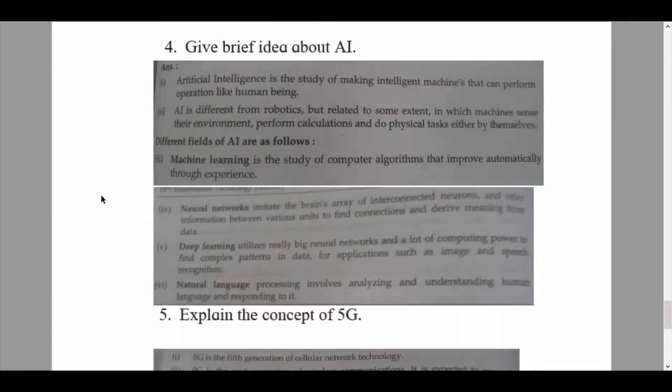Now we continue to our next question, that is question number four: give brief idea about AI. Artificial intelligence is the study of making intelligent machines that can perform operations like human beings. Technology AI is different from robotics but related to some extent in which machines sense their environment before calculations and do physical tasks either by themselves.